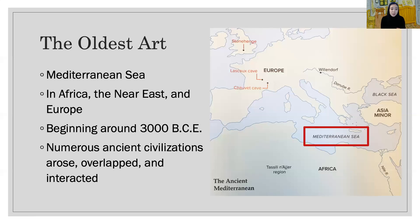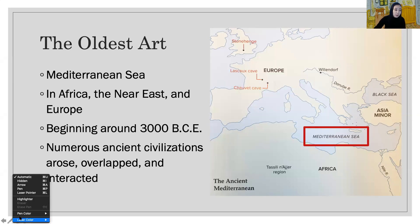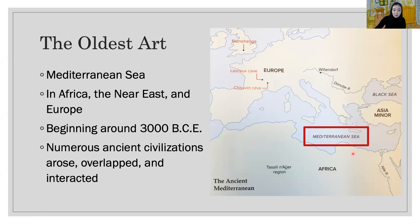The Mediterranean Sea is where the story of western art begins. It is surrounded by Africa, the Near East, and Europe. Beginning around 3000 BCE, numerous ancient civilizations arose, overlapped, and interacted — they learned from one another and conquered each other, and they transformed into the world.